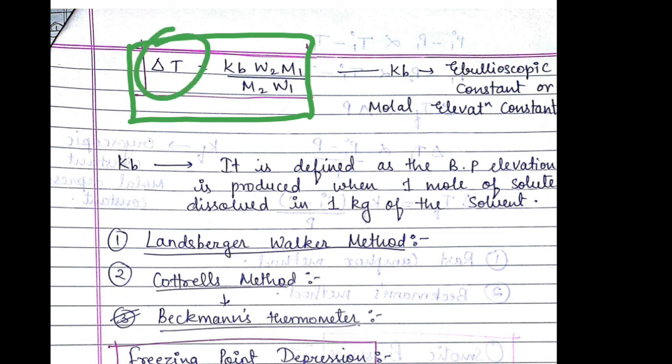ΔTᵦ is the elevation in boiling point. Kᵦ is defined as the boiling point elevation which is produced when 1 mole of the solute is dissolved in 1 kg of the solvent. The methods to determine the elevation of the boiling point are Landsberger-Walker method and Cotrell's method.